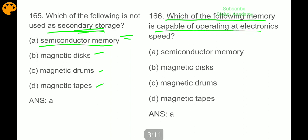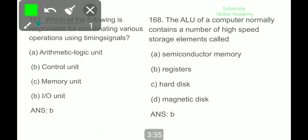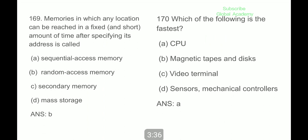Which of the following memory is capable of operating at electronic speed? Semiconductor memory. Which of the following is responsible for coordinating various operations using timing signals? Control unit. The ALU of the computer normally contains a number of high-speed storage elements called registers. Memories in which any location can be reached in a fixed and short amount of time after specifying its address is called random access memory, RAM.